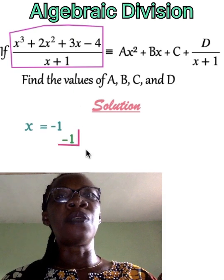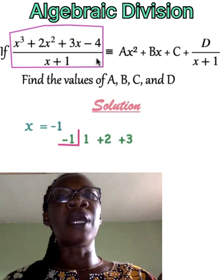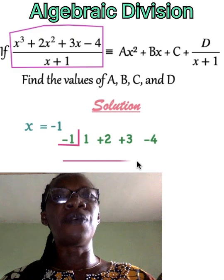The coefficient of x cubed is equal to 1, x squared is equal to 2, x is equal to 3, and the constant is minus 4.